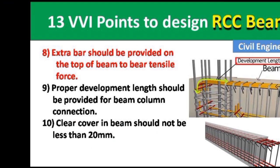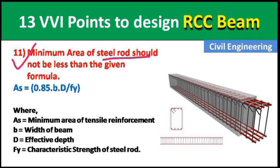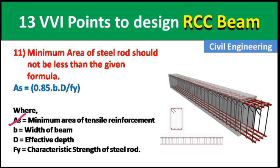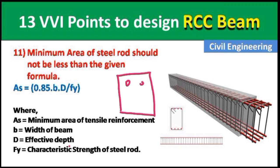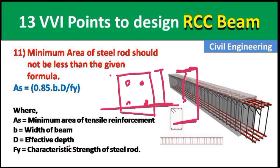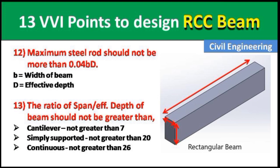Point 11: The minimum area of tensile steel reinforcement should not be less than the formula: As = 0.85 × b × d / fy, where As is the minimum area of tensile reinforcement, b is the width of the beam, d is the effective depth, and fy is the characteristic strength of the steel. The effective depth is the distance from the upper surface of the beam to the mid-span (centroid) of the steel rod — not the full overall depth.